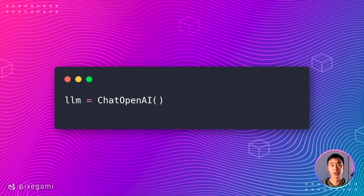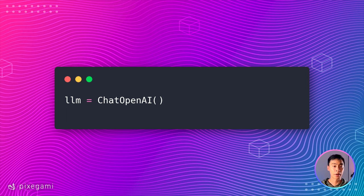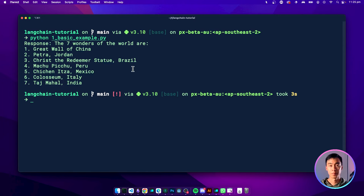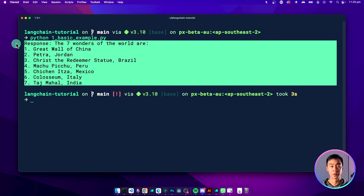Now let's take a look at some code. We can start by creating an instance of the LLM we'd like to use. Here, I'll use OpenAI's ChatGPT model. To make a prediction, use the predict method and then pass in the prompt as a string. And here, the response you get is the text output from the LLM itself.